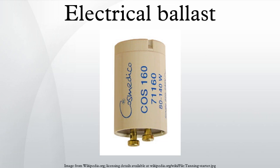An electrical ballast is a device intended to limit the amount of current in an electric circuit. A familiar and widely used example is the inductive ballast used in fluorescent lamps, to limit the current through the tube, which would otherwise rise to destructive levels due to the tube's negative resistance characteristic.